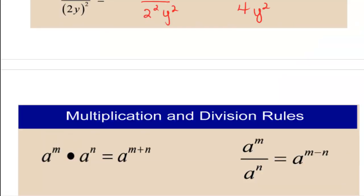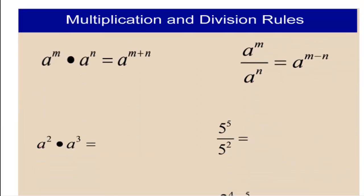Next, we're going to work with multiplication and division of same bases. Remember, when you multiply same bases — and the bases have to be the same — then you add the exponents. If you divide same bases, again bases must be the same, you subtract the exponents. So a squared times a to the third: we keep our base and add our exponents, so we get a to the fifth. Our next example, we keep our base and subtract our exponents, so we get 5 to the third. 5 cubed is 125 and 3 to the fourth is 81.